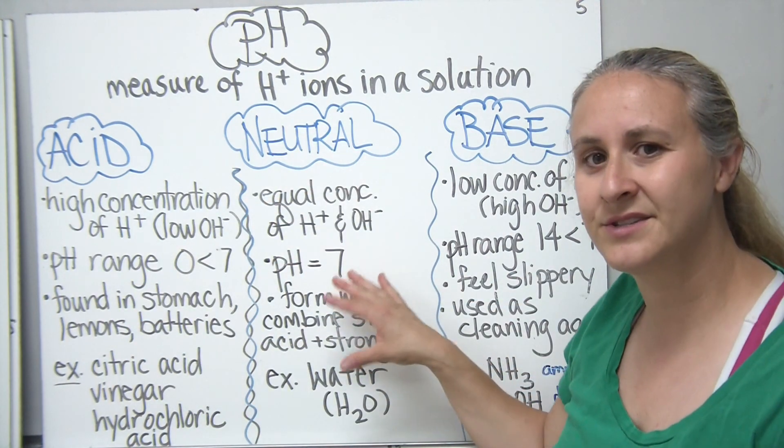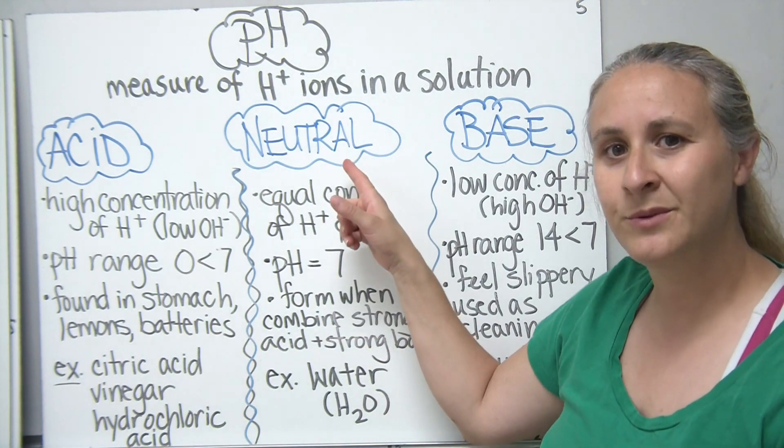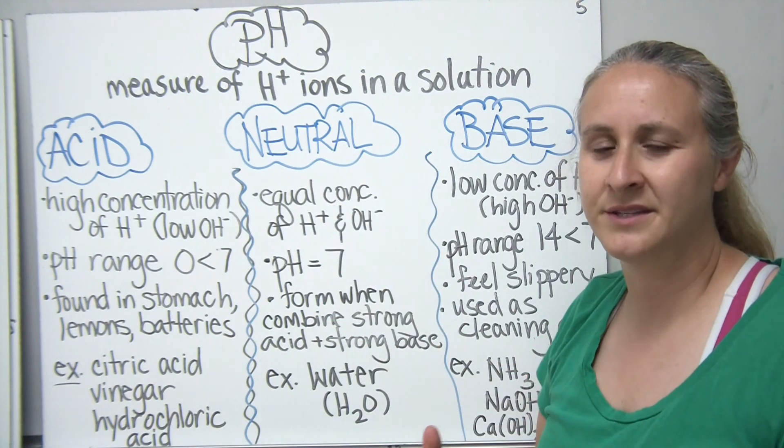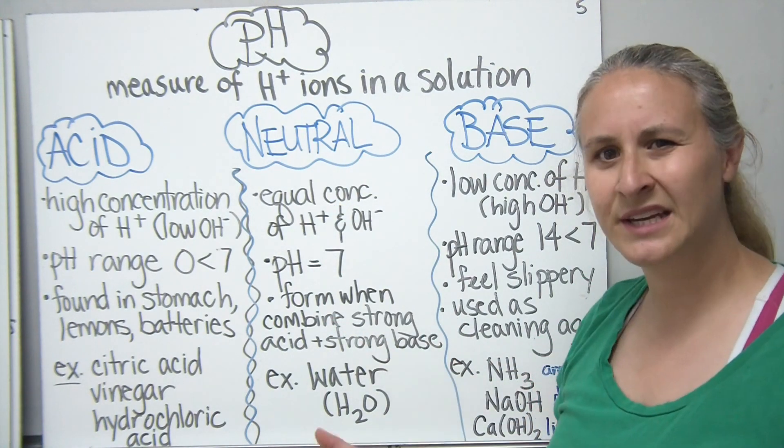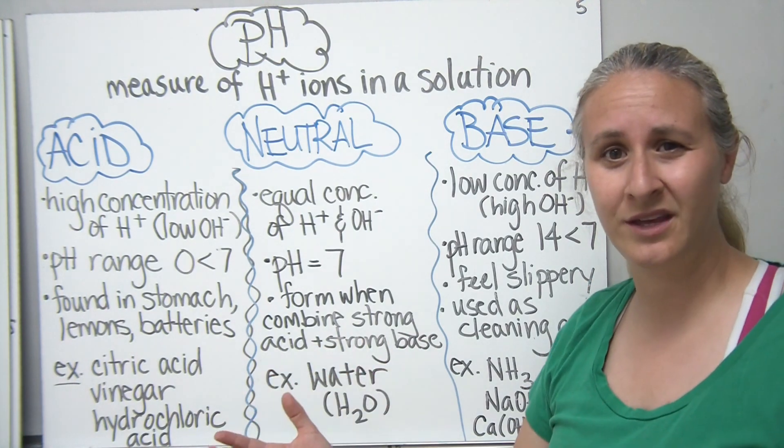Moving along from the acids, as you get a little bit closer and you get to a pH of seven, you would have what's considered to be a neutral pH. If you're neutral on a situation, let's say in an argument, you haven't decided either way which you're going to go to. Are you going to go towards one side or the other?